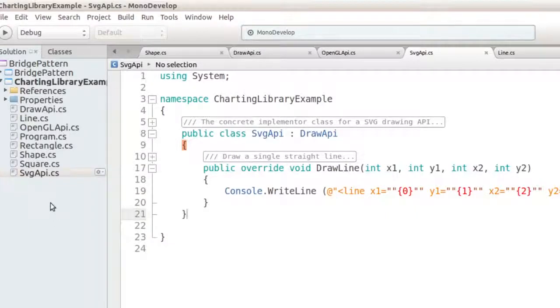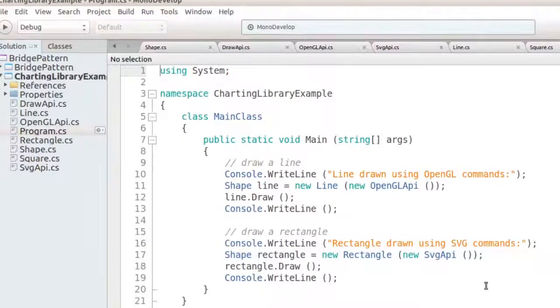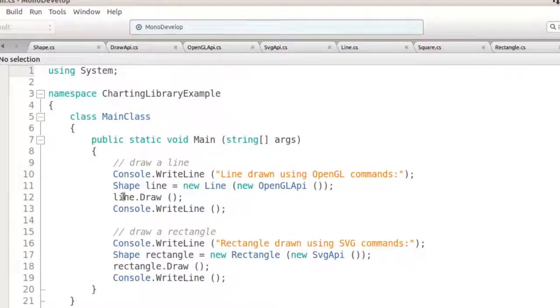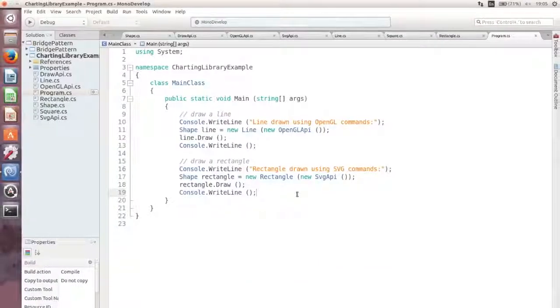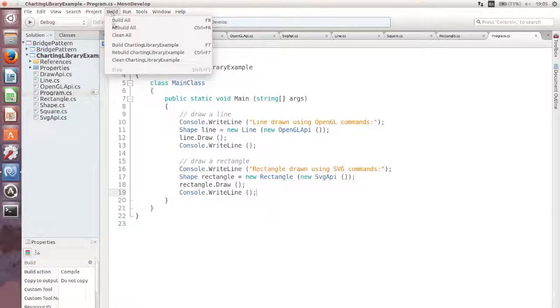Finally, here is the main program method. You can see that it declares a shape variable, instantiates it with a line instance, and initializes it with the OpenGL drawing API. It then asks the shape to draw itself. And down here is the same code all over again, but now it's a rectangle being initialized with an SVG drawing API.